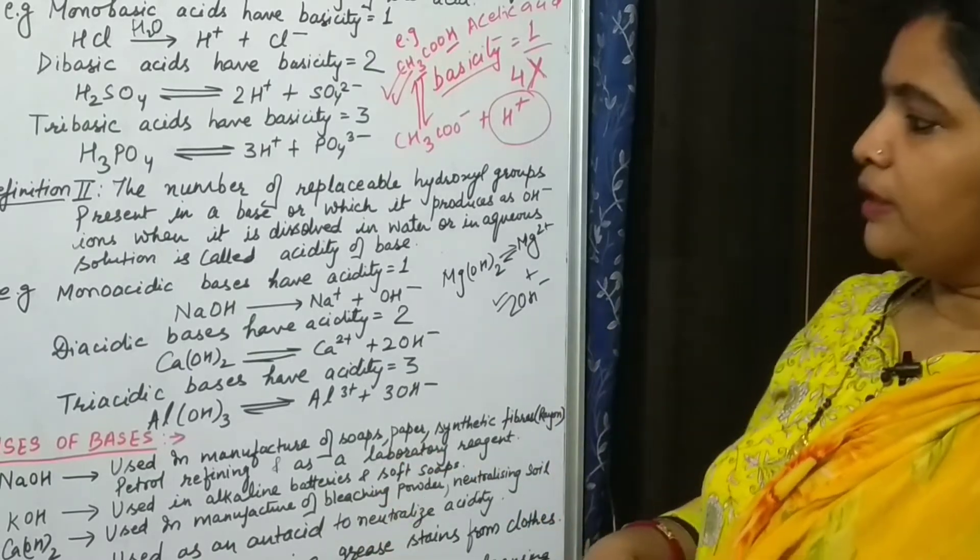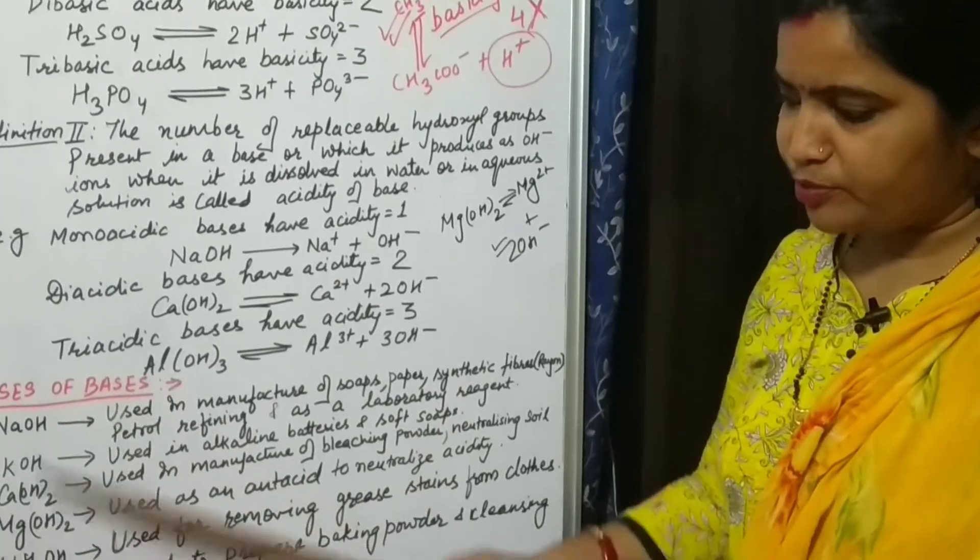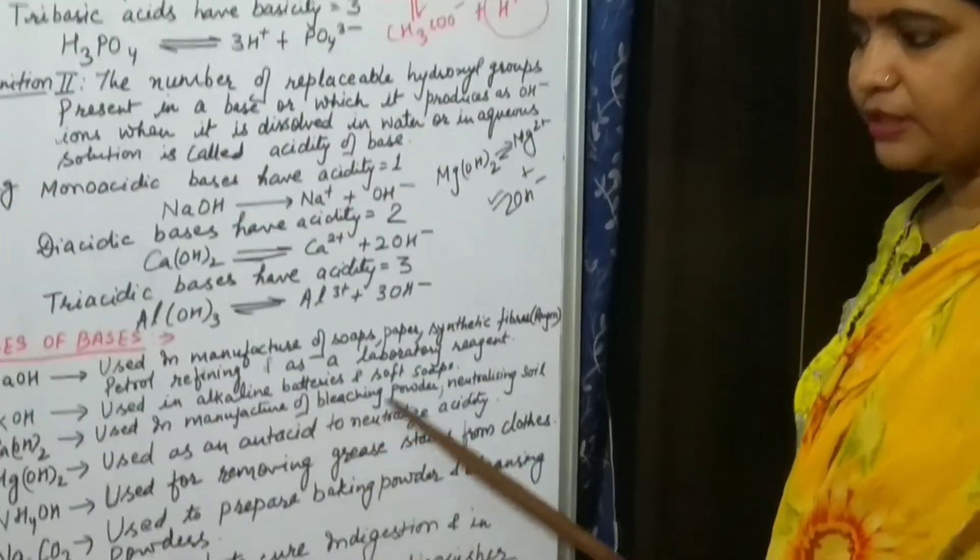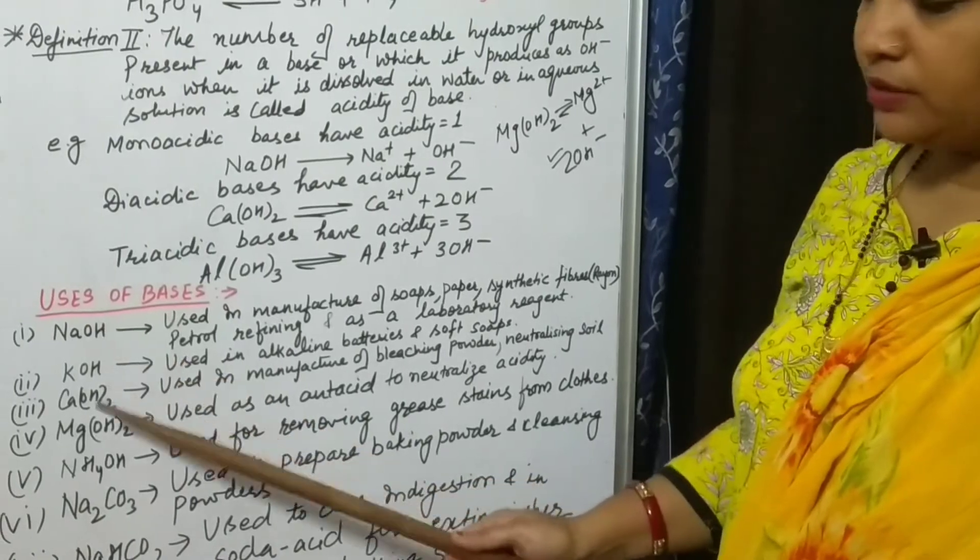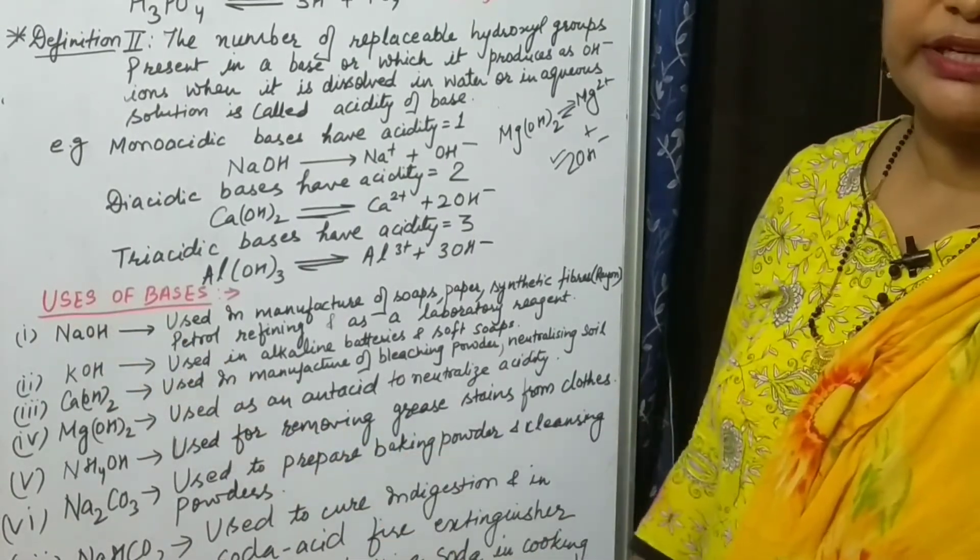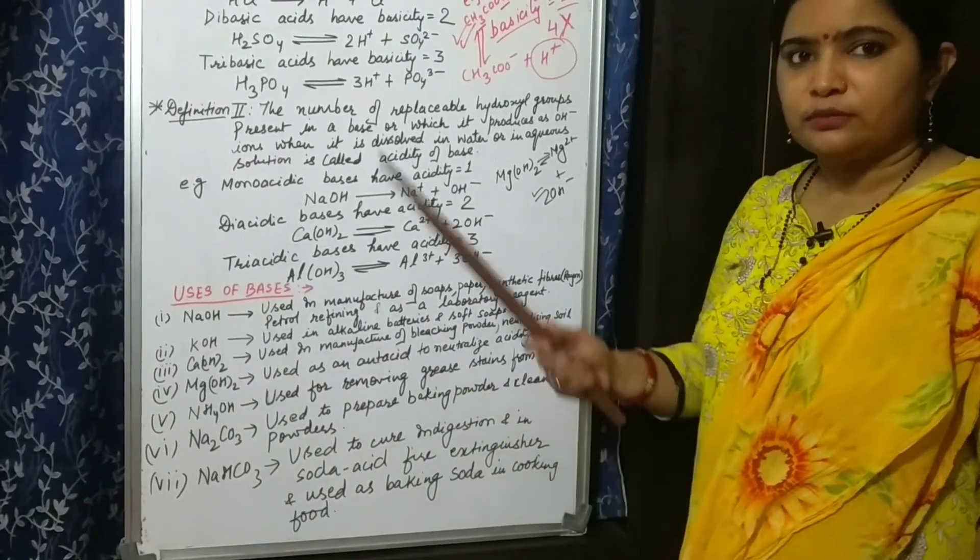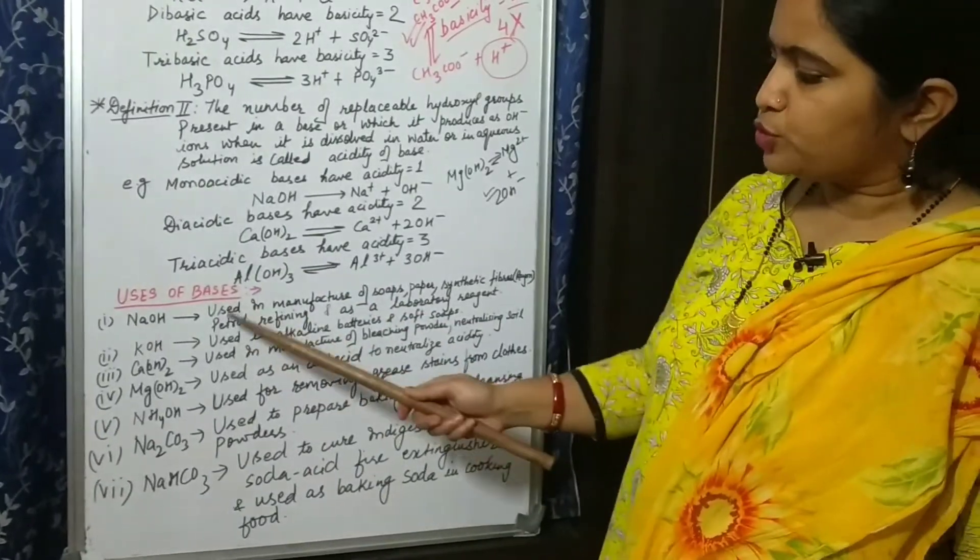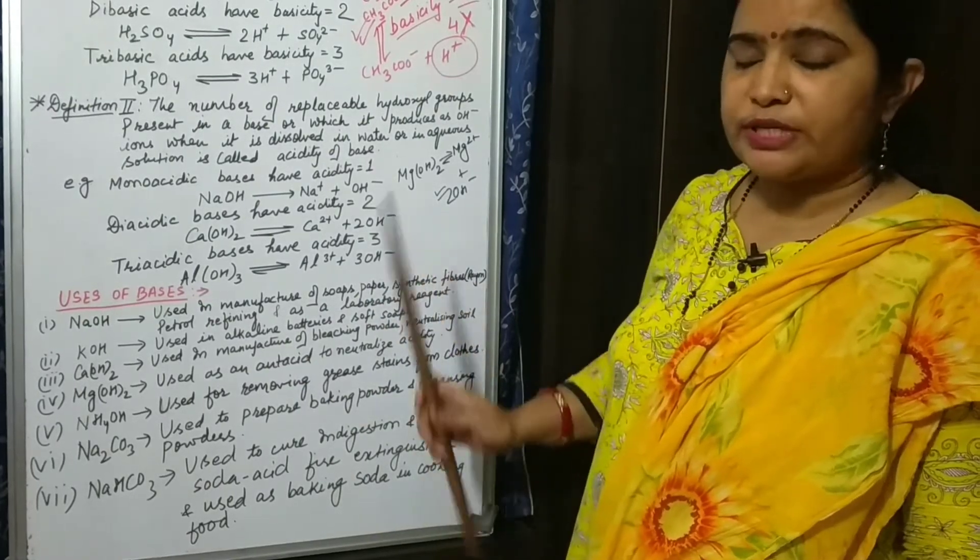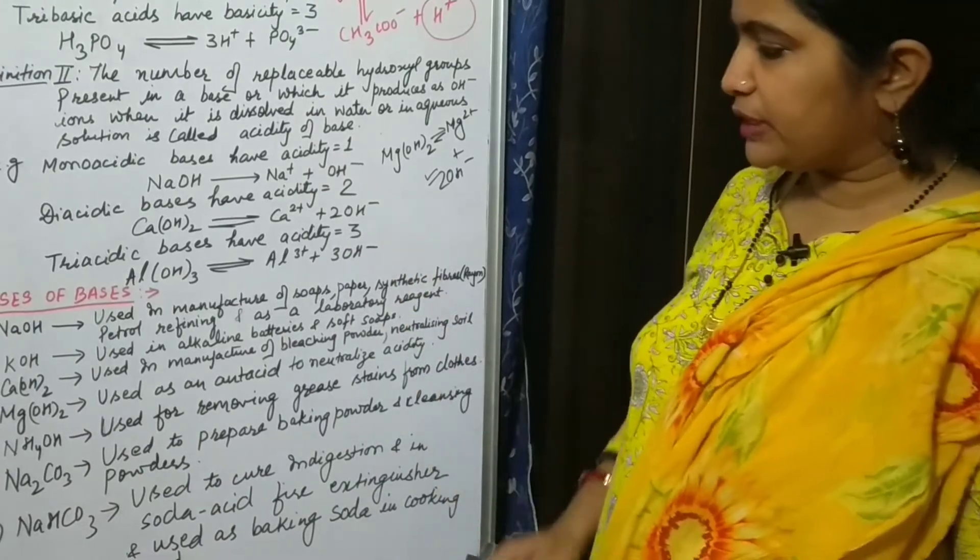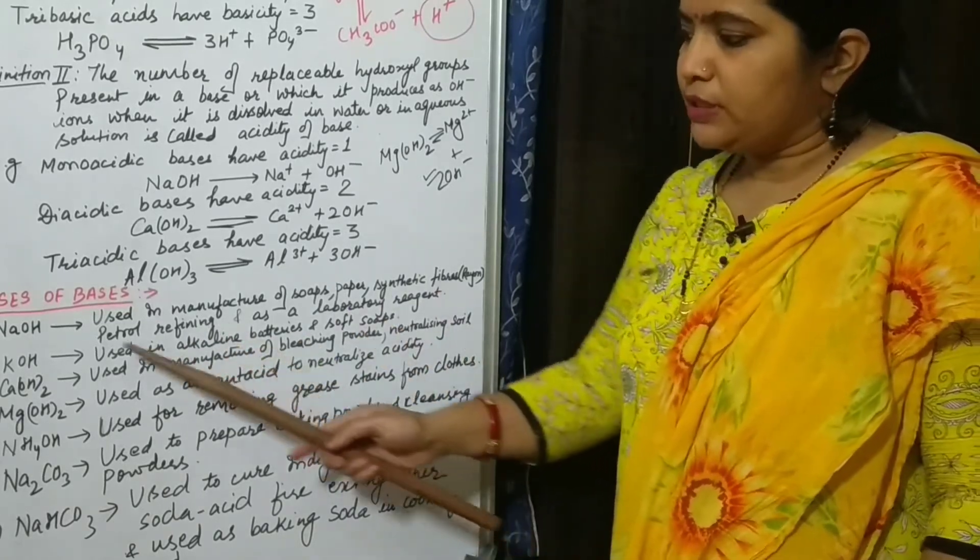Now our last topic is uses of bases. I have taken seven bases here and written their uses also. One by one we will discuss. First one is sodium hydroxide, NaOH. It is very important reagent used in laboratories for practicals in schools and universities. It is used in manufacture of soaps, paper, synthetic fibers. You have already studied about synthetic fibers in your junior classes like rayon. Next, petrol refining and as a laboratory reagent.